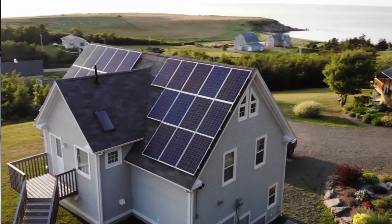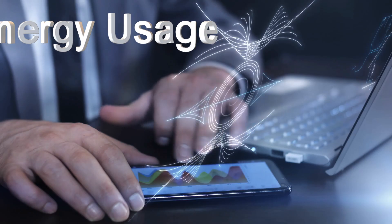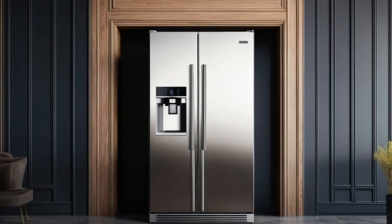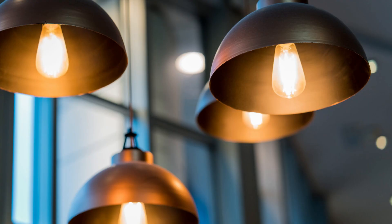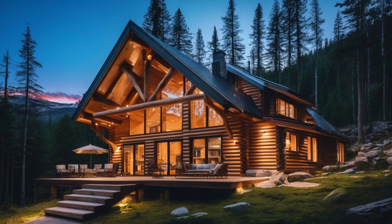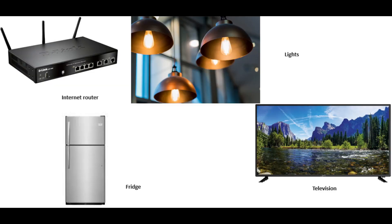First, we must calculate the daily energy needs. Let's say you want to charge some appliances, like a fridge, a couple of lights, a TV, and an internet router while at your cabin. We need to calculate the energy needs to run these items. We need to find out the power consumption of each device and appliance, multiply by how many hours they are used, and then we will get a watt-hour amount.